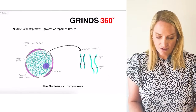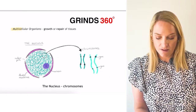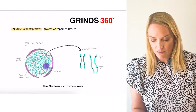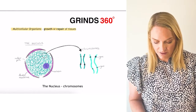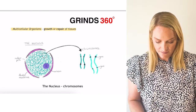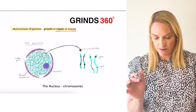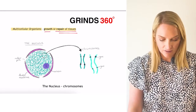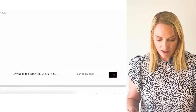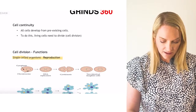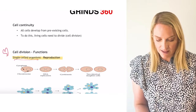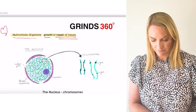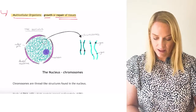The function of cell division in multicellular organisms is growth or repair of tissues. Watch the phrasing — you say repair of tissues or growth of tissues. You need to know the function of cell division in both single-celled organisms and multicellular organisms.